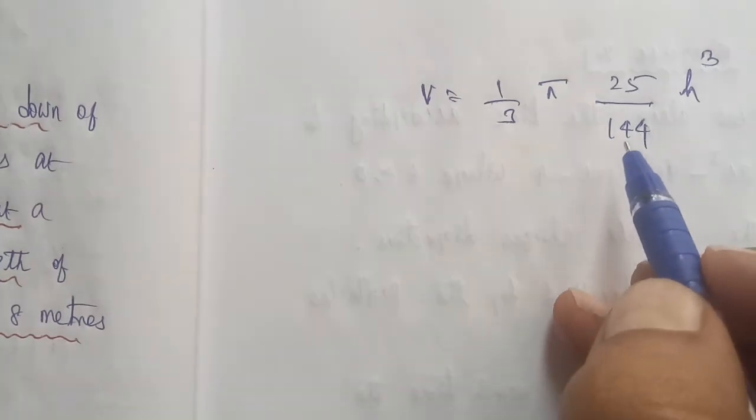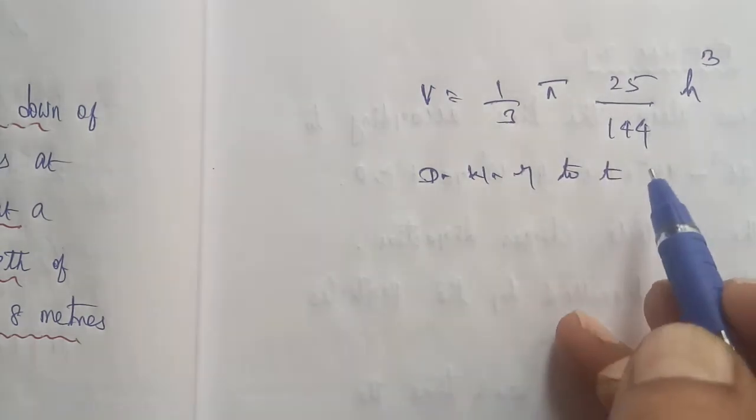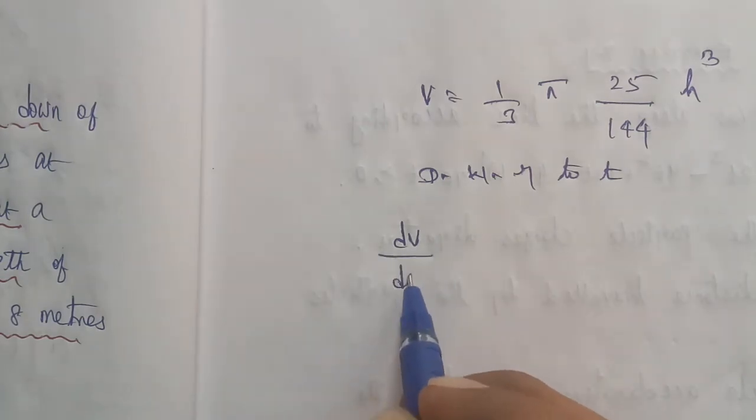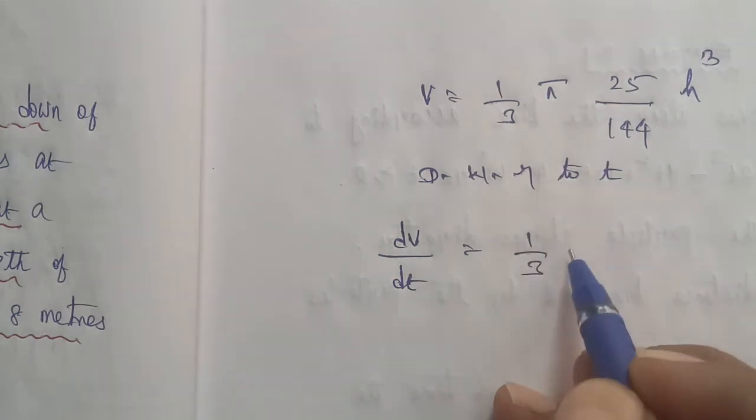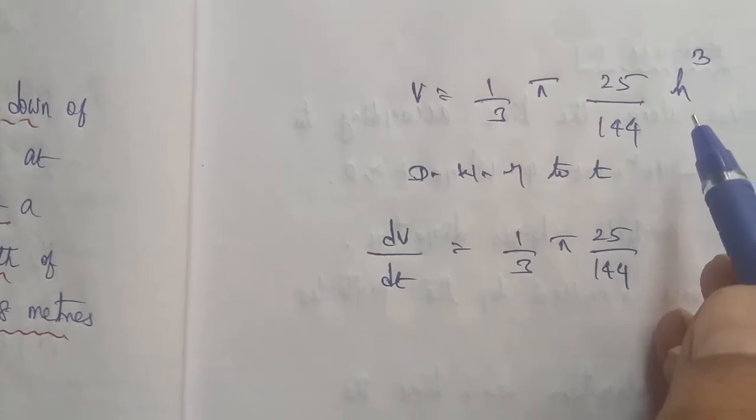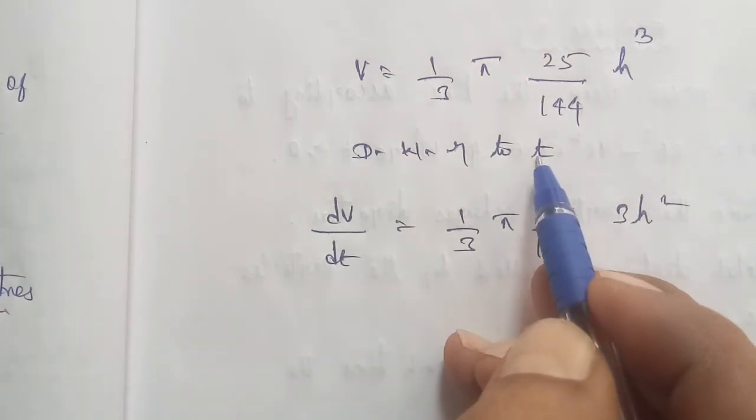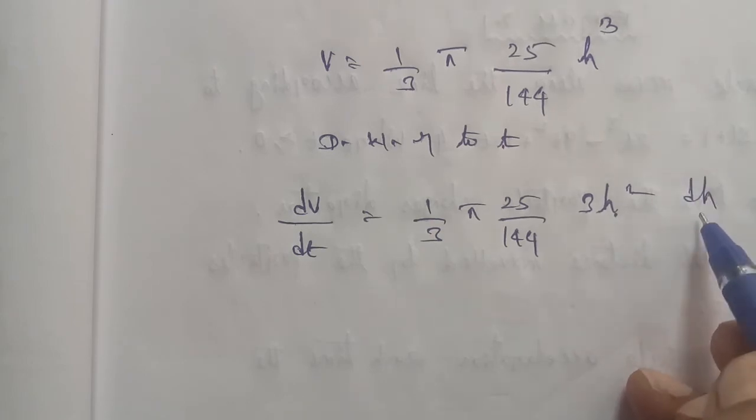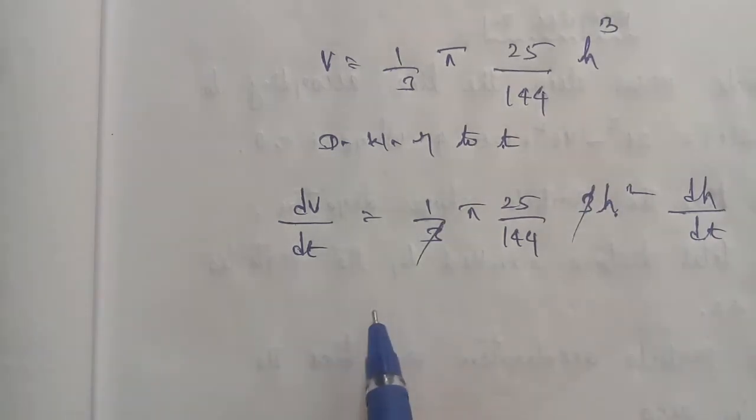Differentiate with respect to t. If v is differentiated, we get dv by dt. Next, 1 by 3 pi 25 by 144 is a constant. If h cube is differentiated, we get 3h square. Differential with respect to t, so this is dh by dt. So the 3 and the 3 is cancelled.